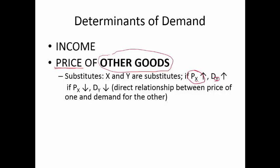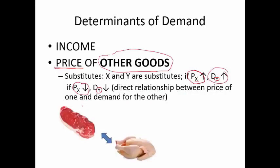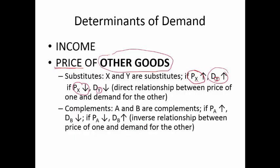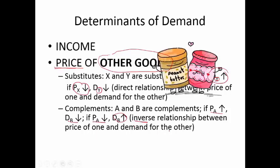If X is getting more expensive and Y is a substitute, I'll want to buy more Y. Likewise, if X gets cheaper, demand for Y goes down — notice the direct relationship between price of one and demand for the other. Example: beef and chicken. The price of beef rises, demand for chicken rises — or vice versa. Goods can also be complements — used together in consumption. If the price of A rises, demand for B declines because you're using less A, and if you're using less A you're also using less B.